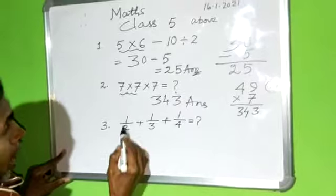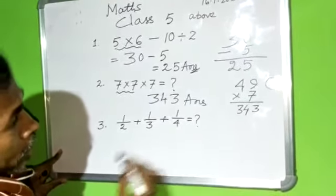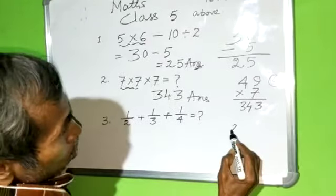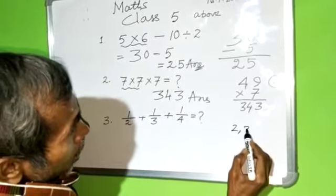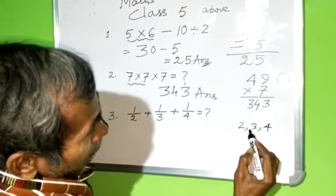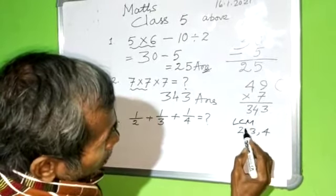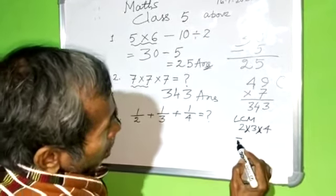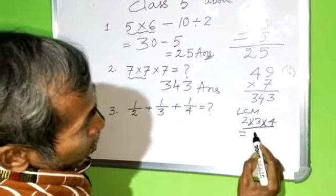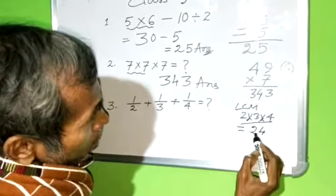Now 1 by 2 plus 1 by 3 plus 1 by 4 equal to what? LCM of denominators 2, 3, 4. LCM: 3 into 2 into 4 equal to 12 into 2, 24. 4, 6 into 4, 24.